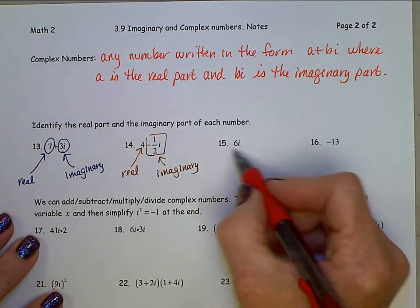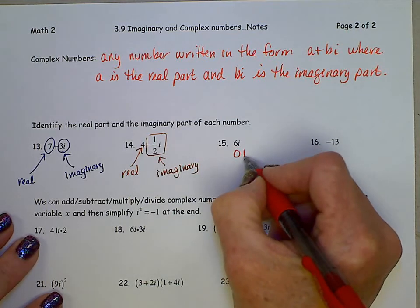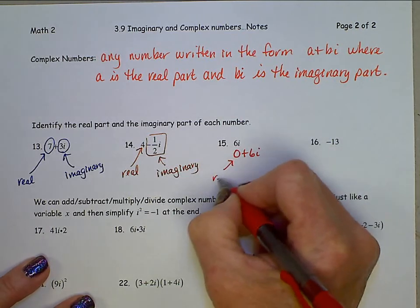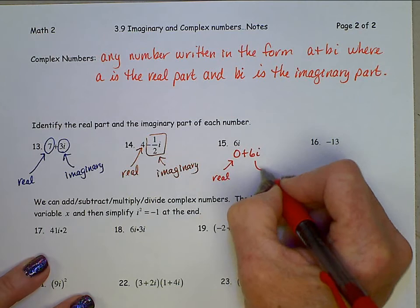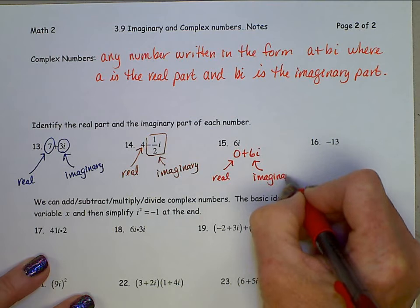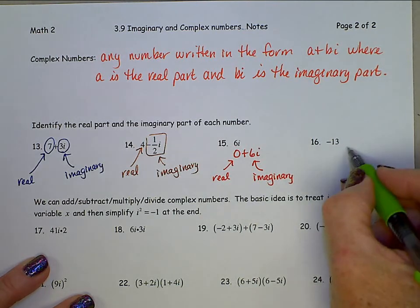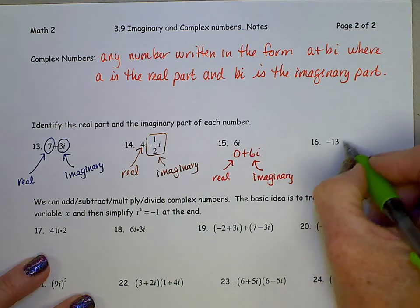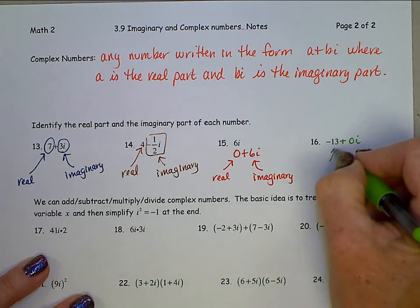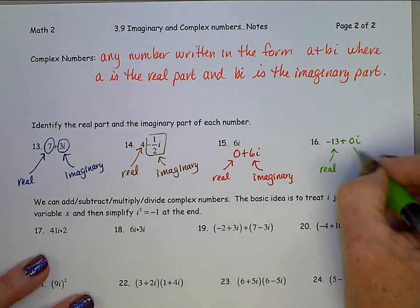For 6i with no real part, you could write this as 0 plus 6i — the real part is 0 and the imaginary part is 6i. For negative 13 with no imaginary part, we can write that as a complex number: negative 13 plus 0i — the real part is negative 13 and it has a 0 imaginary part.